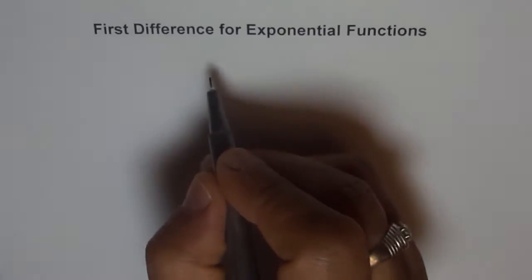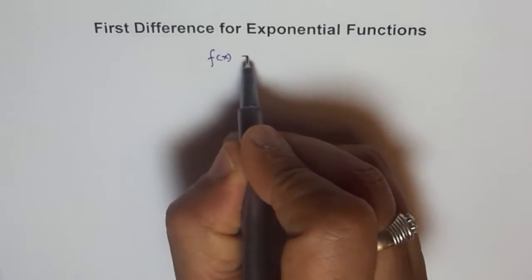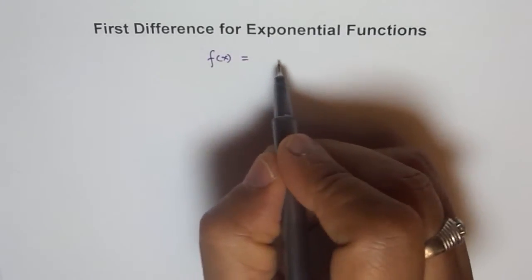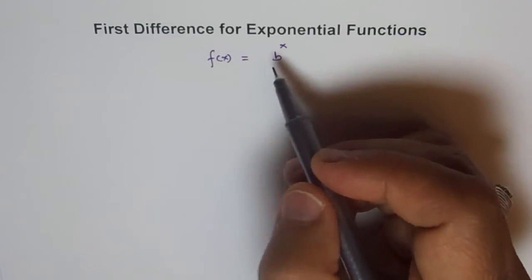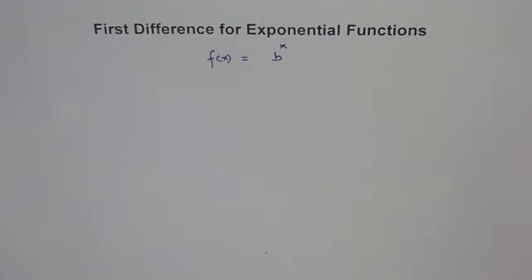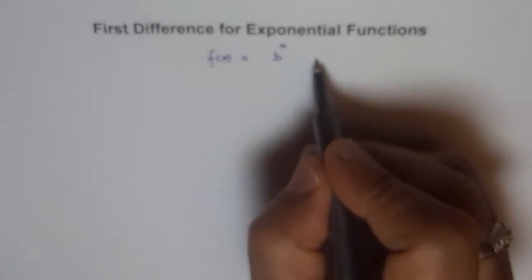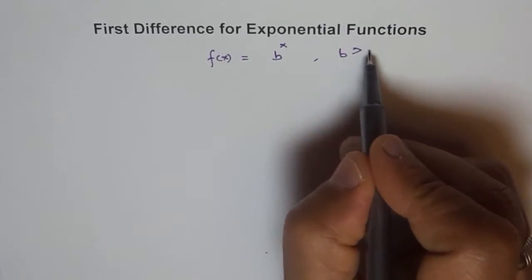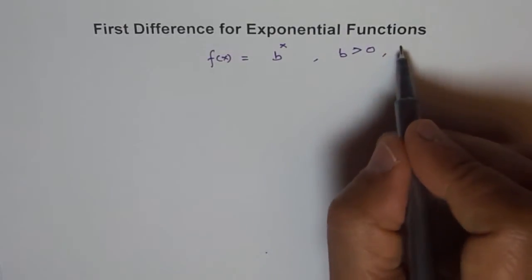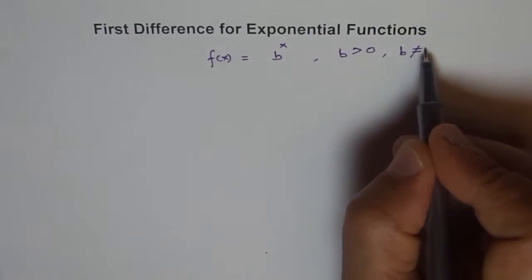Let's explore the first difference of an exponential function. An exponential function is generally written as f(x) = b^x, where x is in the exponent. The restrictions are that b is always greater than 0 and b is not equal to 1.